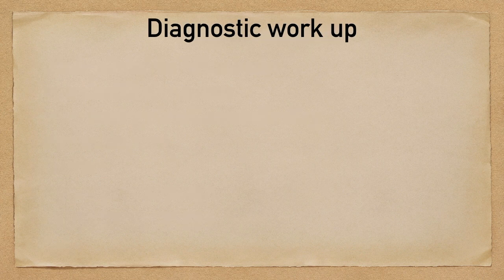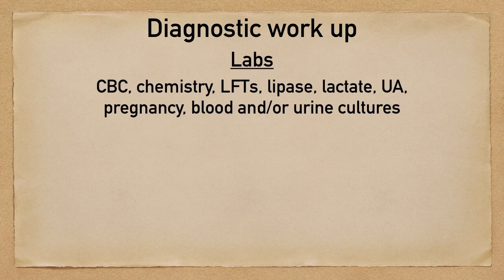Now that you have obtained that history and performed the physical examination, you should have a pretty good prioritized differential list that's going to help you figure out how you're going to work up this patient. Some lab considerations include the following. For most patients with abdominal pain, standard basic labs will include CBC, chemistry, liver function tests, and lipase, which checks the pancreas.